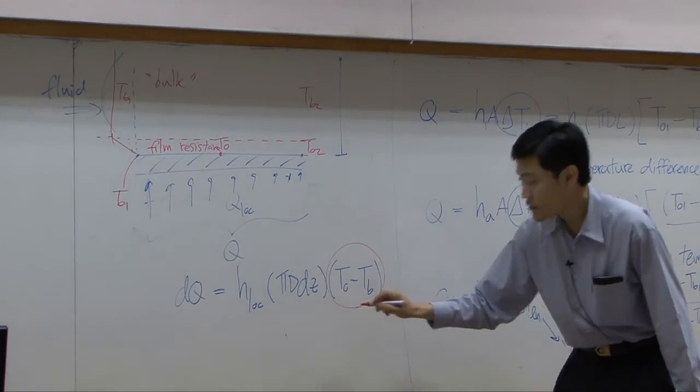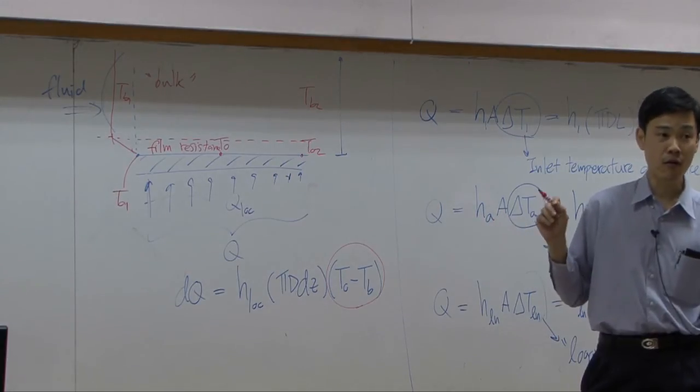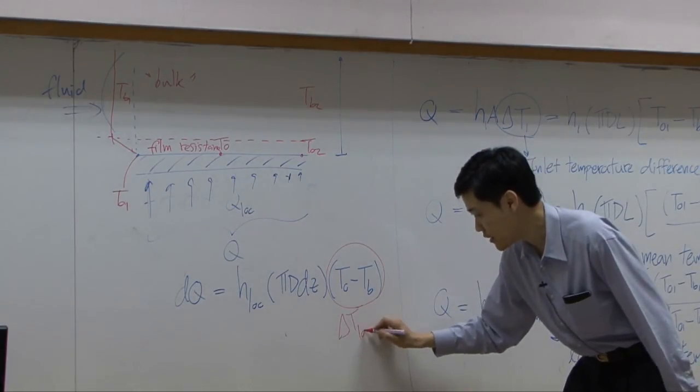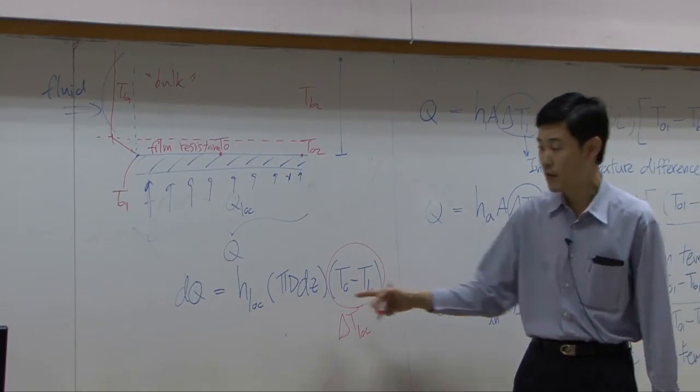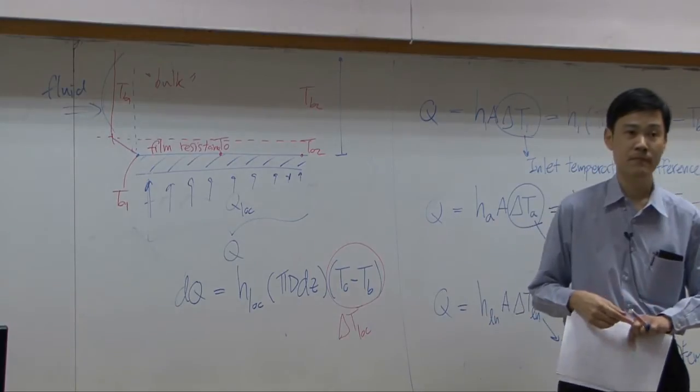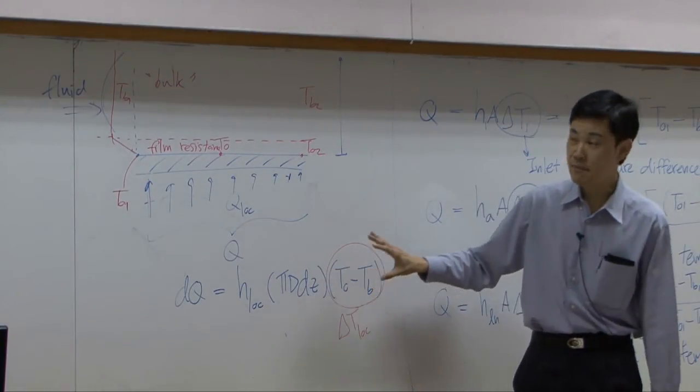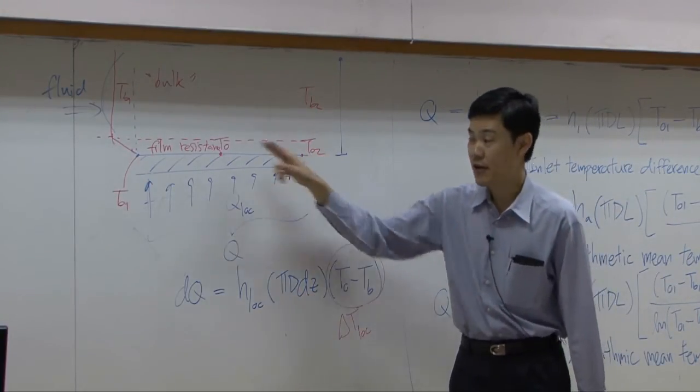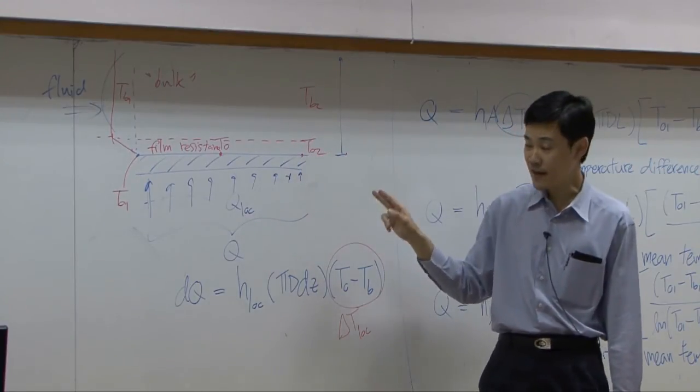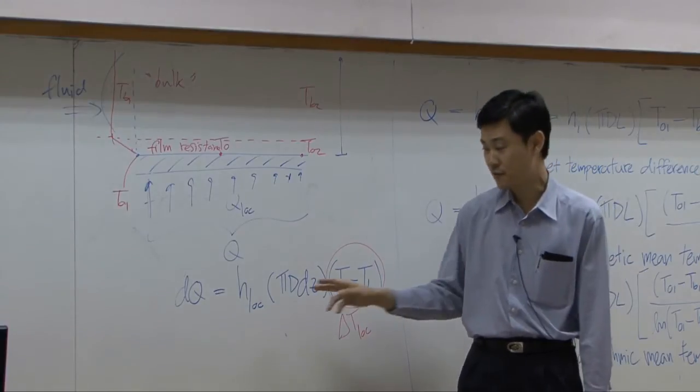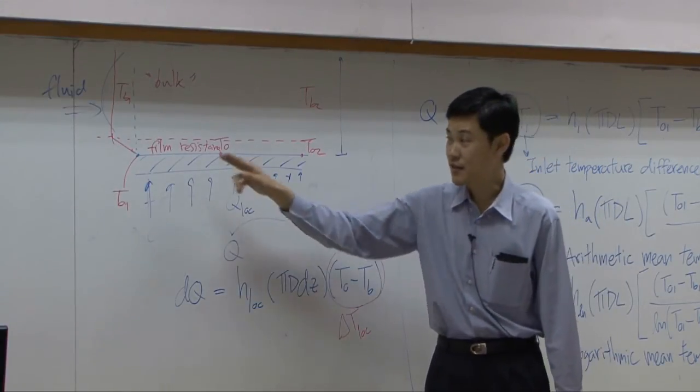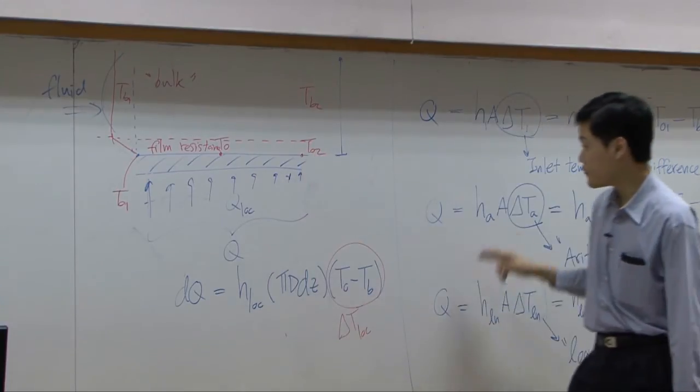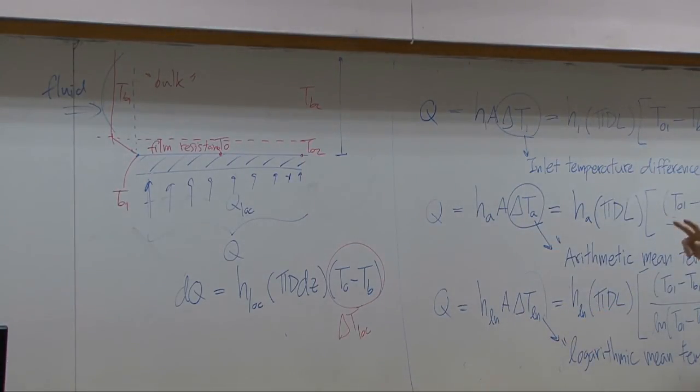So the driving force here will be found locally. So sometimes this one is called delta T local. Heat transfer coefficient will be local as well. So if you use this equation, it means that you recognize that heat transfer coefficient itself varies along the length of the pipe. So you think that you prepare yourself that h here still changes with respect to position. But if you use one of these three, you assume that heat transfer coefficient is constant along the length.